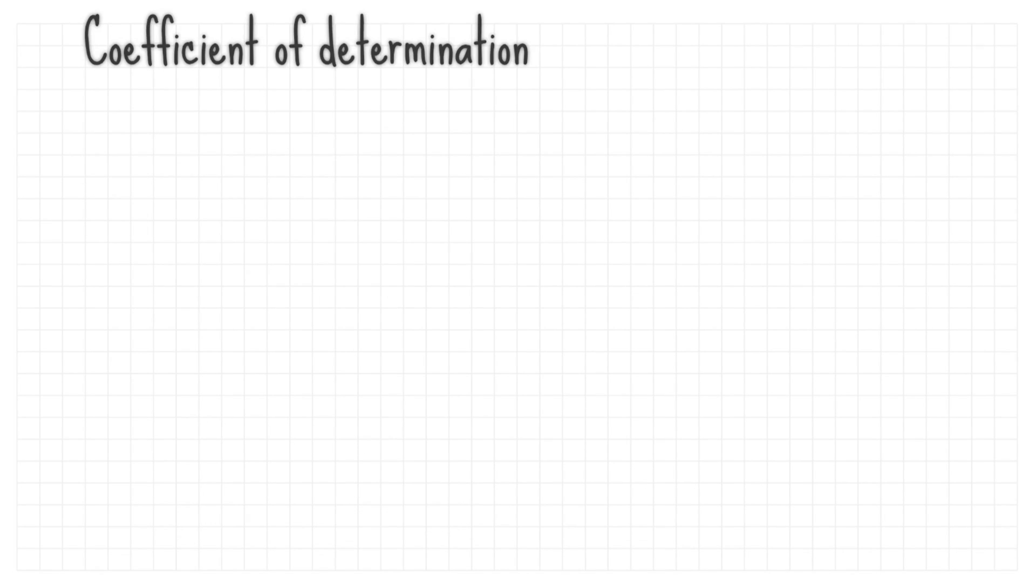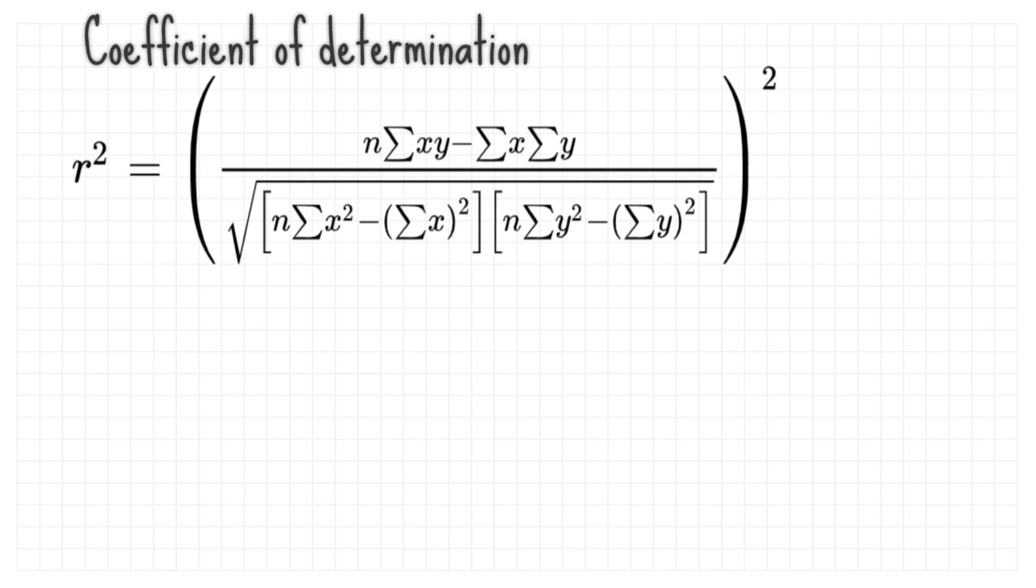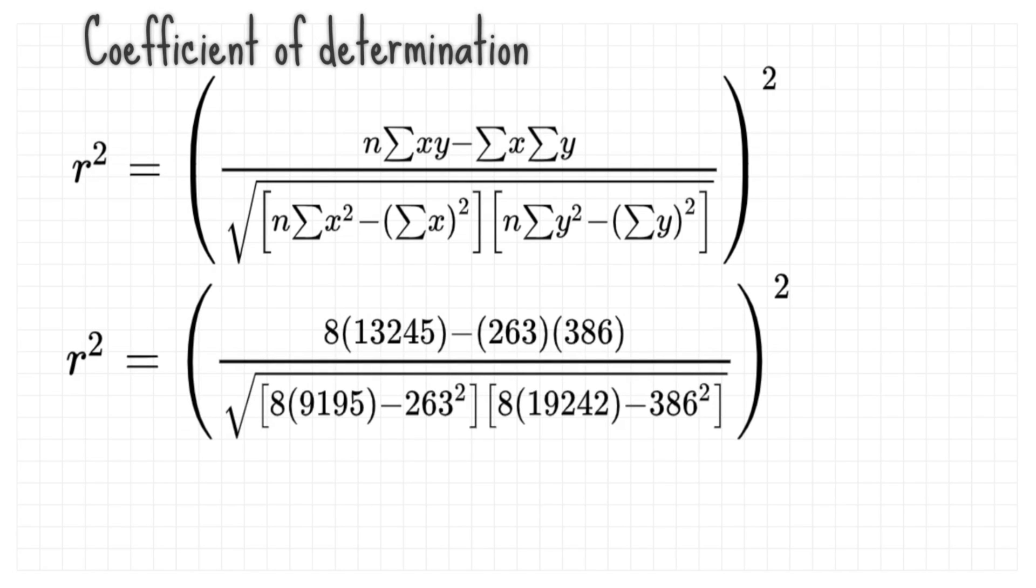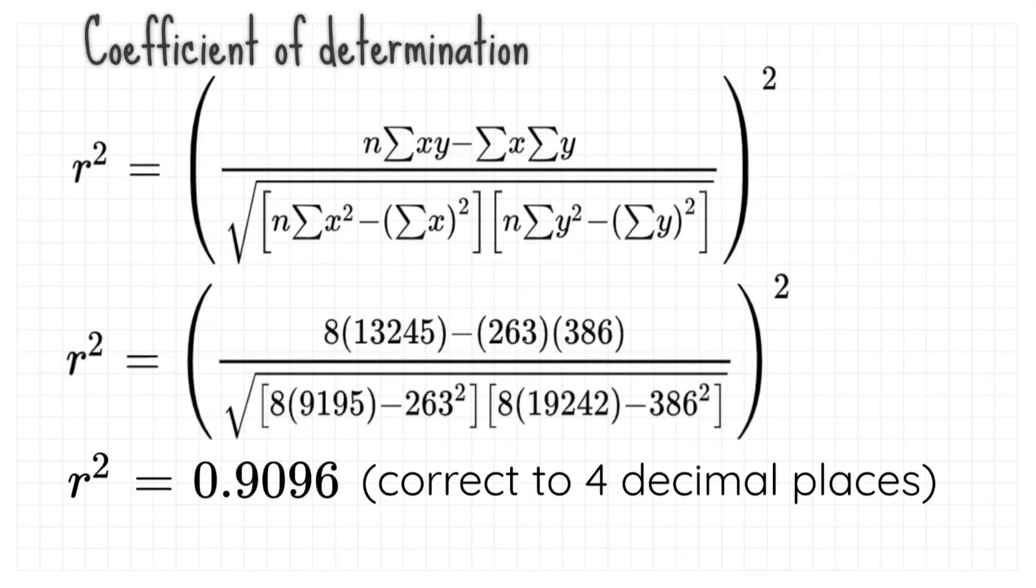Substitute N and all the summation into the formula of coefficient of determination. And r squared is 0.9096 correct to 4 decimal places.